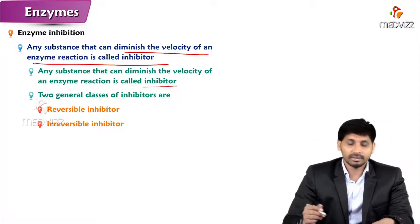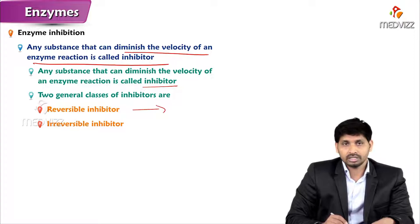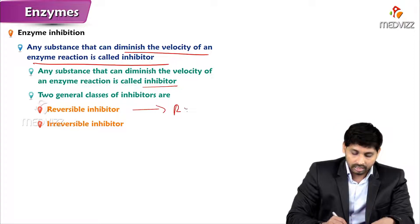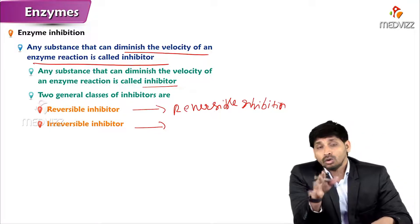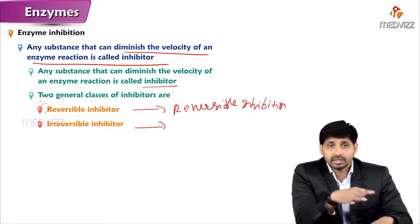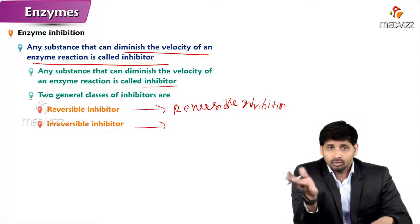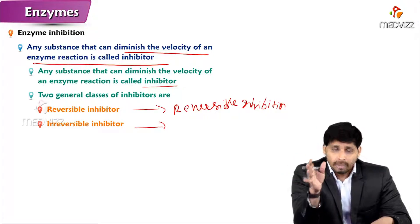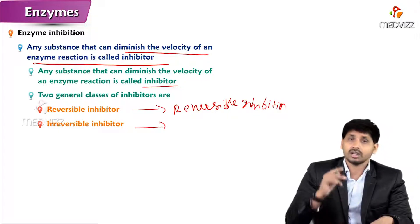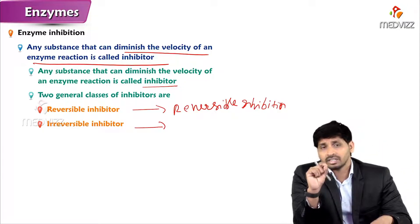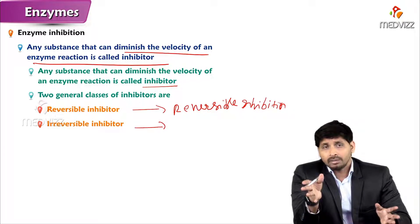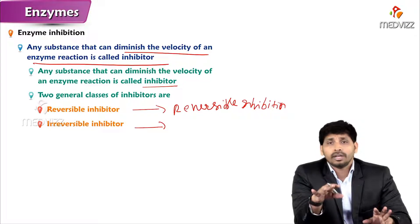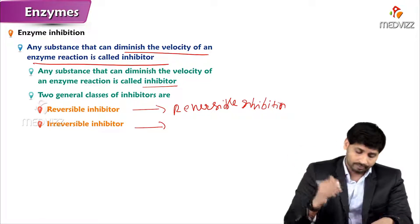There are two types of inhibitors: reversible inhibitors and irreversible inhibitors. A reversible inhibitor causes reversible inhibition — if you remove the inhibitor, the enzyme reaction returns to normal. But in the case of an irreversible inhibitor, once it binds to the enzyme, the reaction cannot proceed further, and even if you remove the inhibitor, the enzyme remains deactivated.